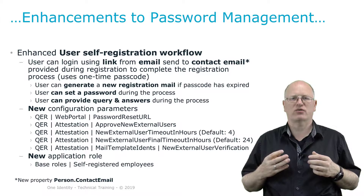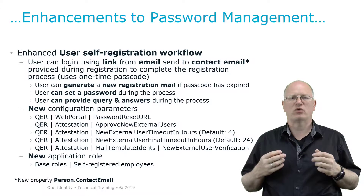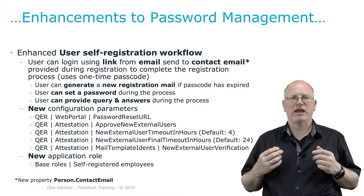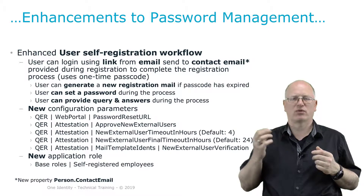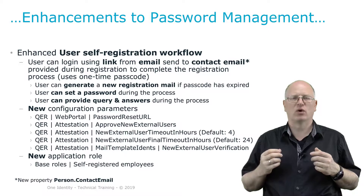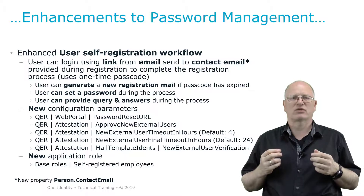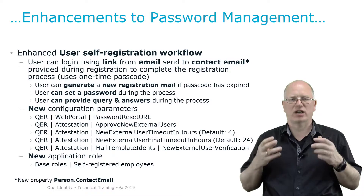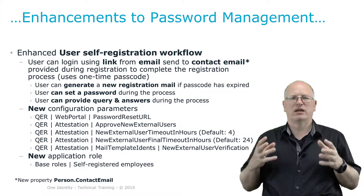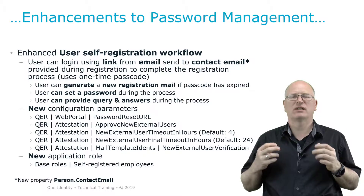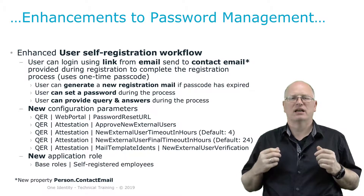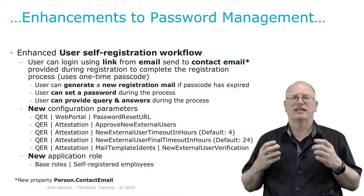A new employee record was created and an attestation process was started. Up to two decision makers — the first one was a member of a specific role — had to decide. This person was also able to enter a manager, and then that manager had to decide as well. If both decided positively, the user was able to sign in for the first time to the identity manager.